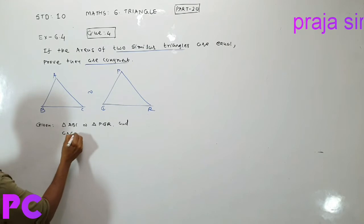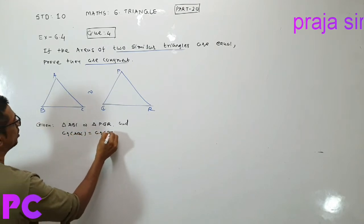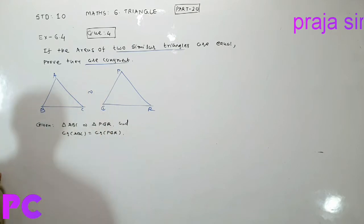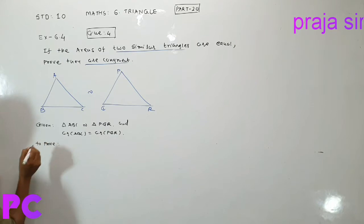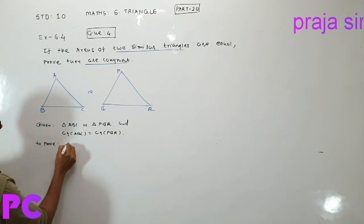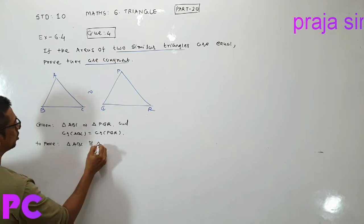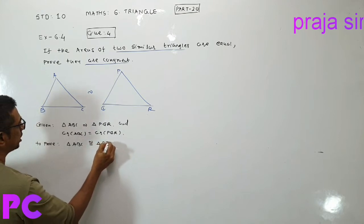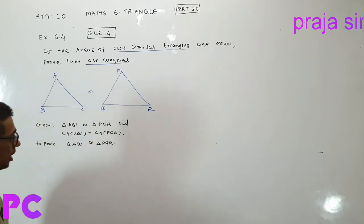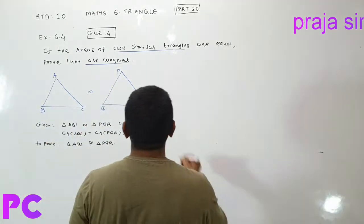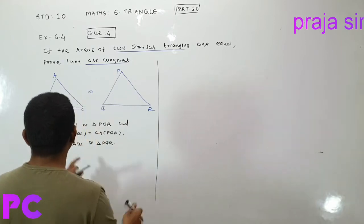Area of ABC is equal to area of PQR. To prove: triangle ABC is congruent to triangle PQR. We have to prove congruence. Now let's talk about what is given first of all in the proof.